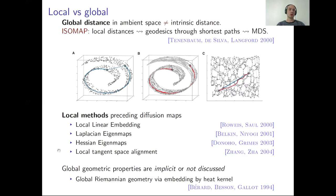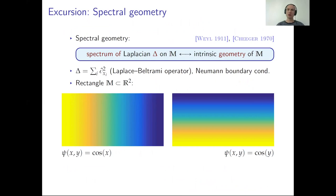Isomap promoted local methods, and many arose, but somehow all were ignoring some properties of global geometry. It was diffusion maps that brought back a global geometric framework into consideration, by an idea that had existed in pure mathematics but was not widely known. To approach the problem from a different angle, let us take an excursion into spectral geometry.